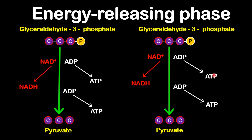For each glyceraldehyde-3-phosphate, there are two ATP and one NADH produced. So together, you'll notice we have four ATP and two NADH, as well as two pyruvate molecules.